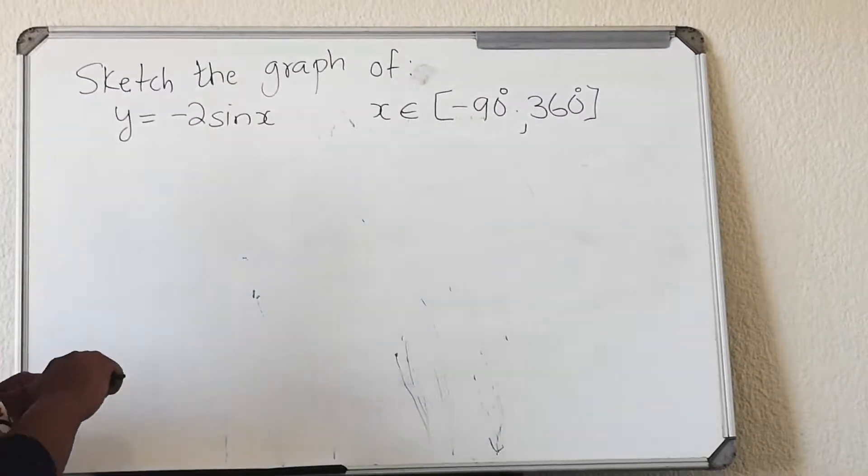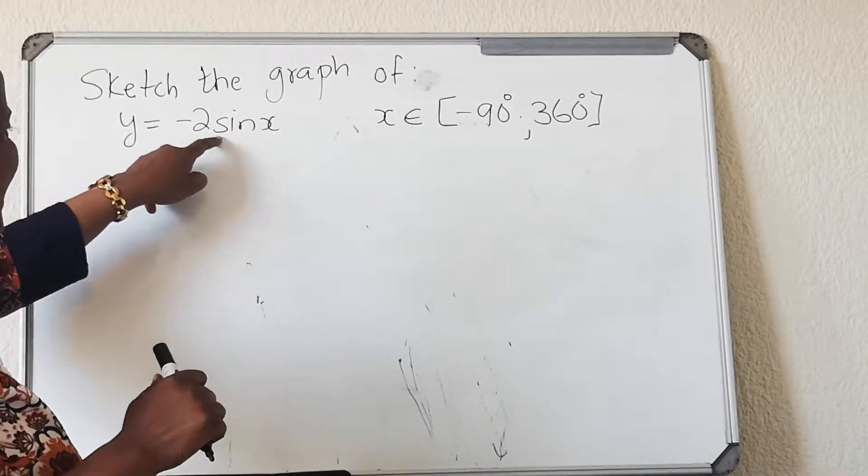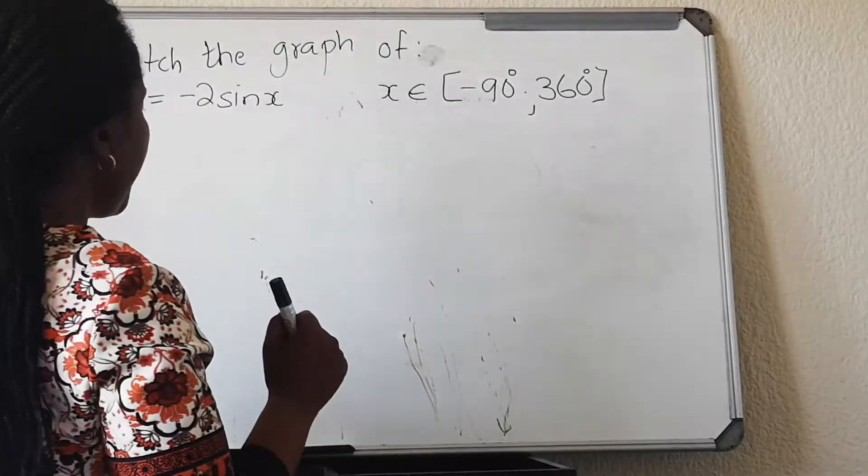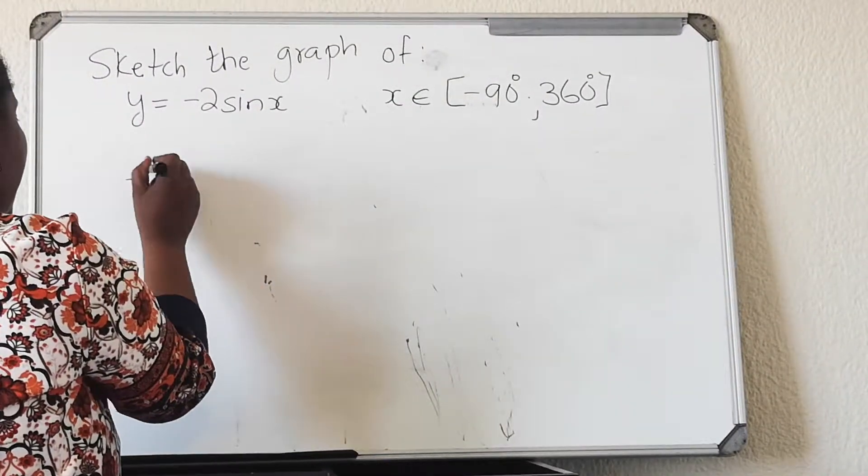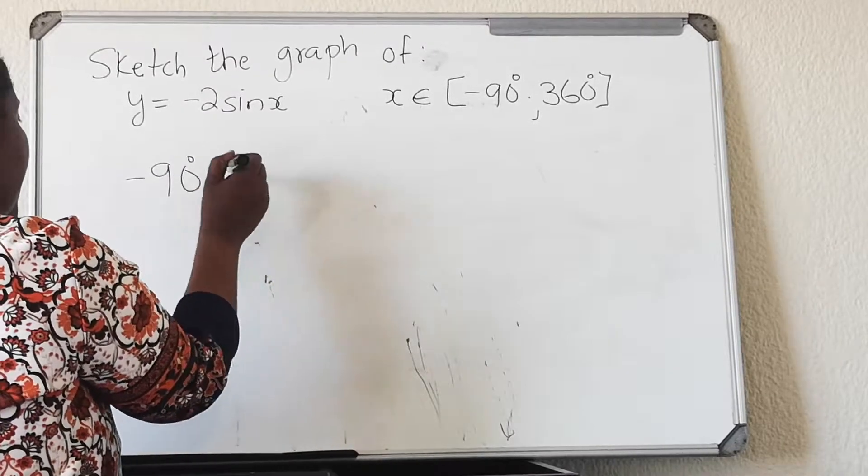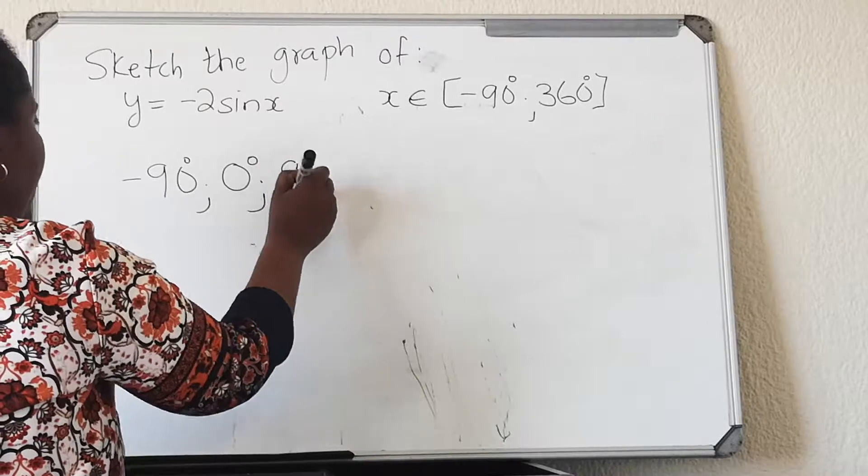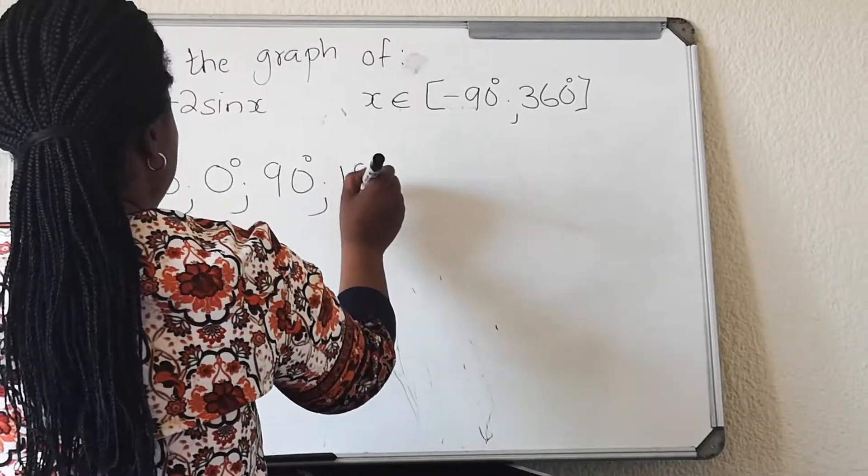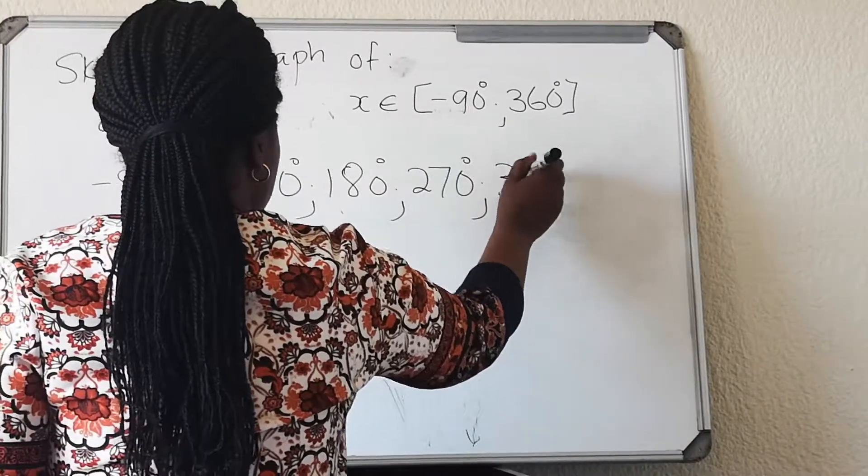You need to remember all the standard things with a sine function. Number one, you need to remember that sine, you start with a restriction, minus 90, and then there's a change in every 90 degrees. So you're going to have zero degrees, you're going to have 90 degrees, and you're going to have 180 degrees, and then 270 degrees, and then 360 degrees.